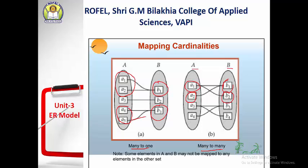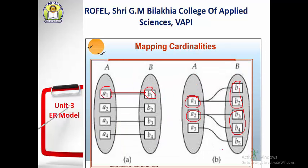I hope you understand one-to-one, one-to-many, many-to-one, and many-to-many relationships — known as the mapping cardinalities of the entity relationship model and entity relationship diagram. Thank you.